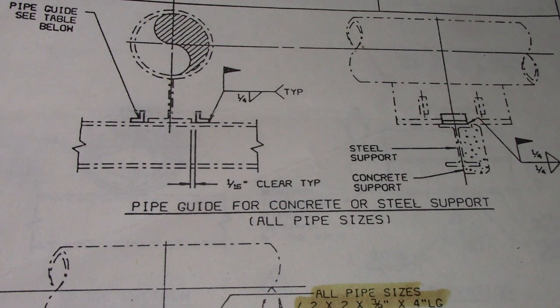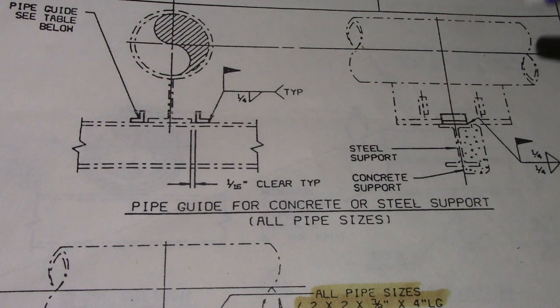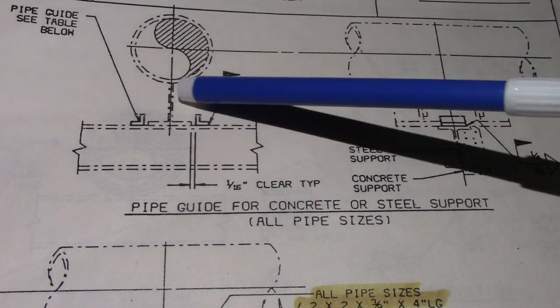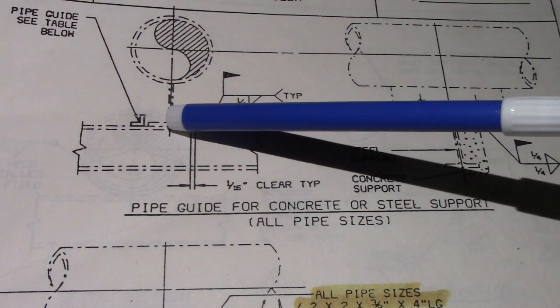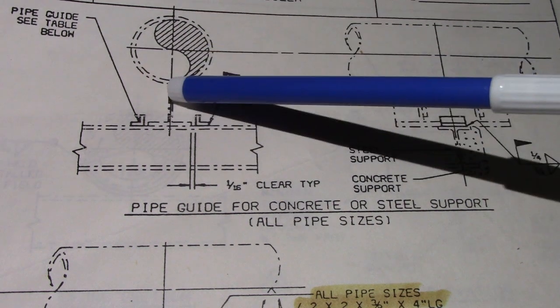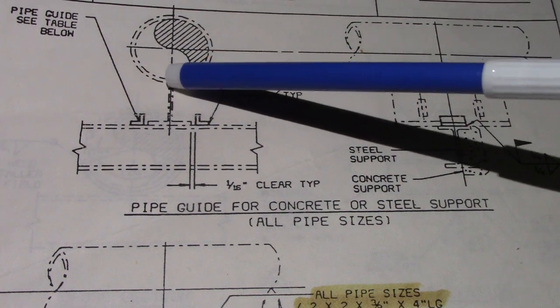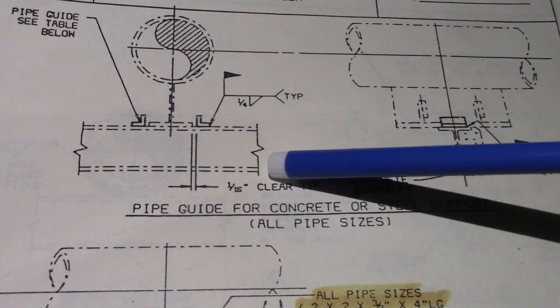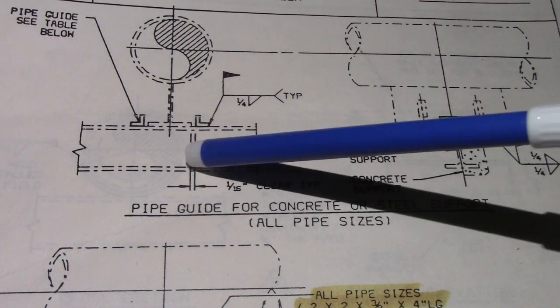This is pipe shoes. In piping, they have a lot of supports to be installed, and this is a support detail example of a pipe shoe. This pipe shoe is a welded type, meaning this pipe is welded on this pipe. You can see the I-beam also, with front view and side view.